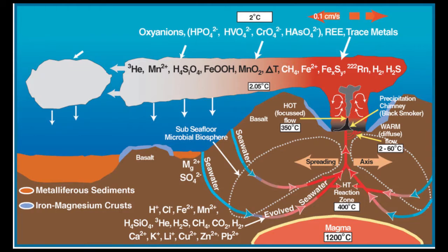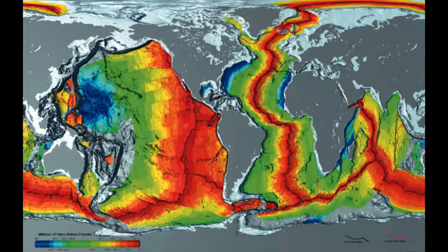Creating new crust upon cooling, a mid-ocean ridge demarcates the boundary between two tectonic plates, and consequently is termed a divergent plate boundary. Mid-ocean ridges are geologically active, with new magma constantly emerging onto the ocean floor and into the crust at vents along the ridge axis.